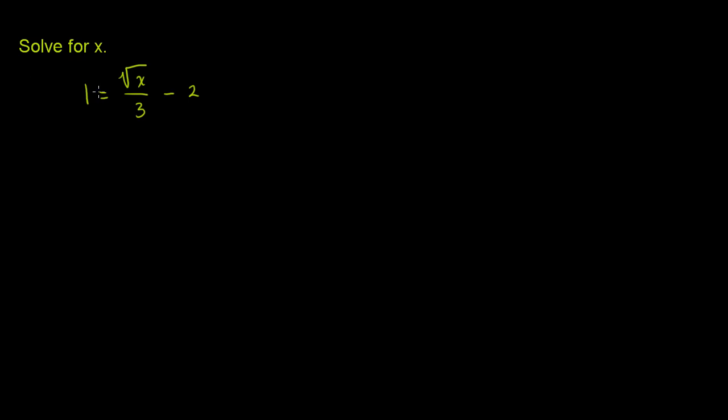We're asked to solve for x. And we have this radical equation: 1 is equal to the principal root, or the positive square root, of x divided by 3, minus 2.